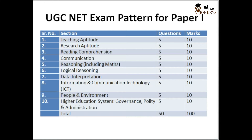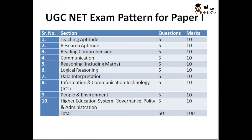Section 6 is Data Interpretation, which is very important and is like a part of statistics, where data interpretation skills are tested. Section 7 is Information and Communication Technology, which is very important in today's world. Section 8 is People and Environment, Section 9 is Higher Education System, and Section 10 covers Governance, Quality and Administration.